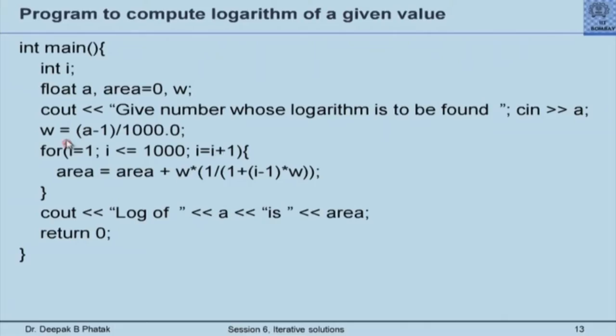Please remember to practice your iteration-setting mechanism and note whether the iteration executes the correct number of times. Notice the steps: I get the value of a, I set up w, I set up an iteration to add areas of all rectangles — all summed in the area variable. Note that area must be initialized to 0, which is a prudent measure. When I come out of this loop I have calculated the area, so I simply output 'log of a is area.'